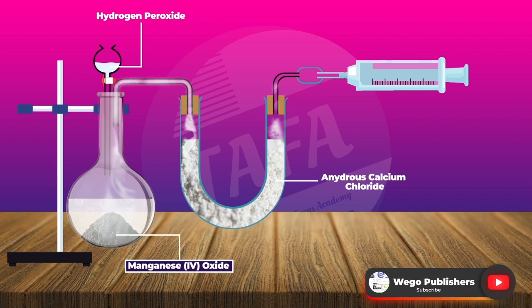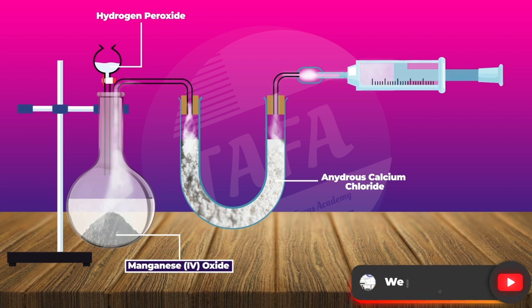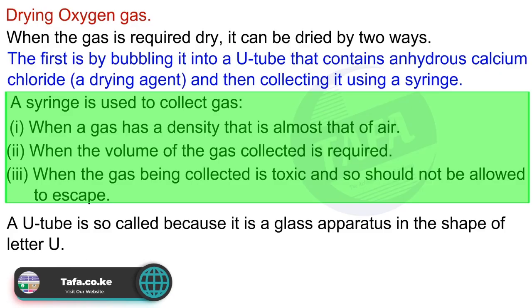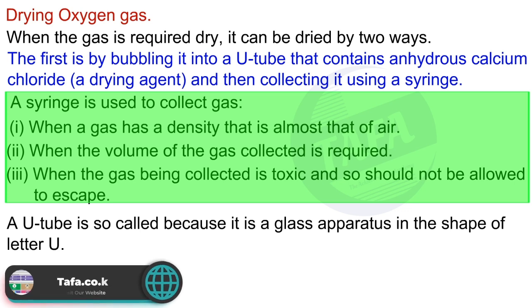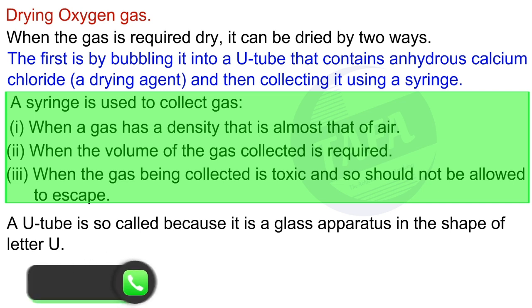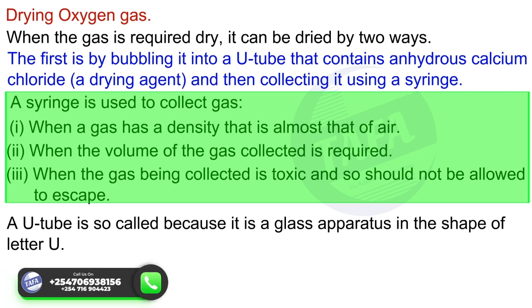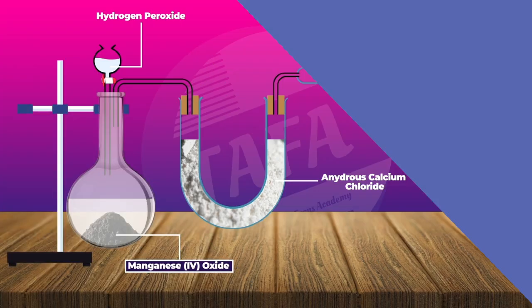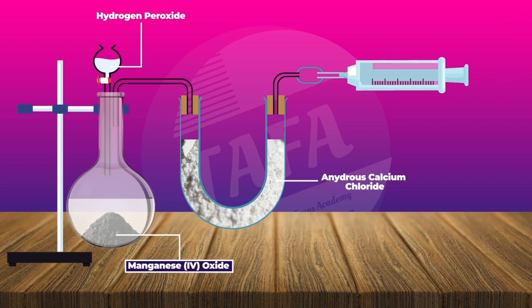A syringe is used to collect gas in the following cases: one, when the gas being collected has a density that is almost that of air; two, when the exact volume of gas collected is required; and three, when the gas being collected is toxic and should not be allowed to escape.